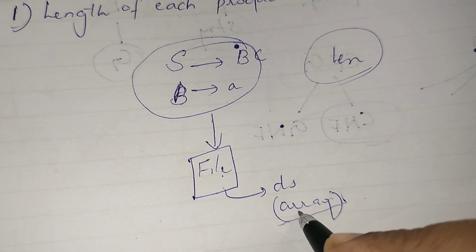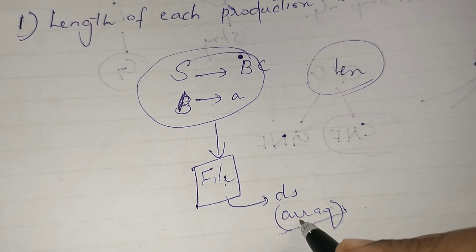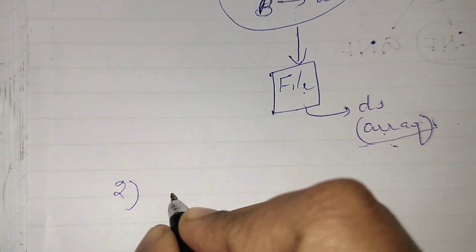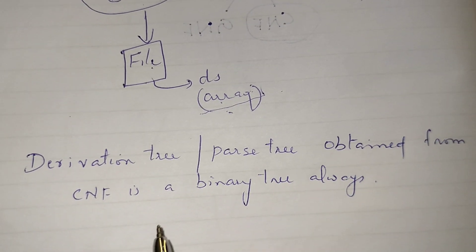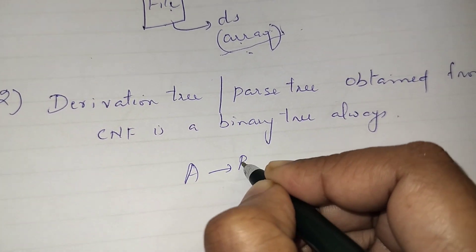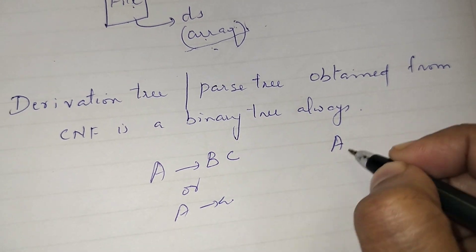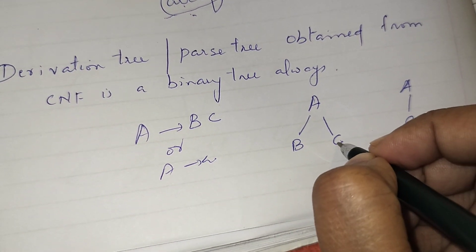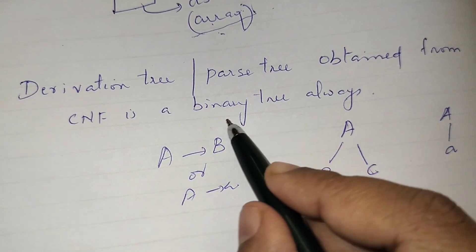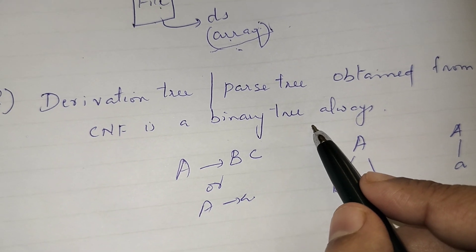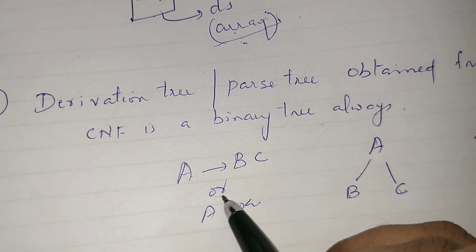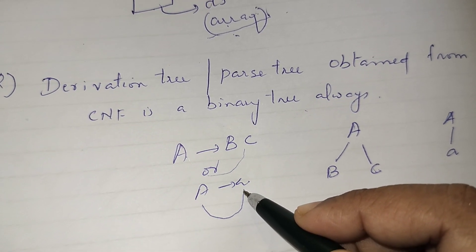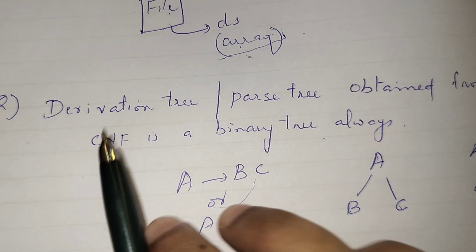So it is always better to use a restricted form like CNF. Using CNF, every production has a specified length and can easily be stored and represented as a linear data structure. The second advantage is that the derivation tree or parse tree obtained from Chomsky Normal Form is always a binary tree. Since productions are A → BC or A → a, any node derives at most two children, so the parse tree is always a binary tree.